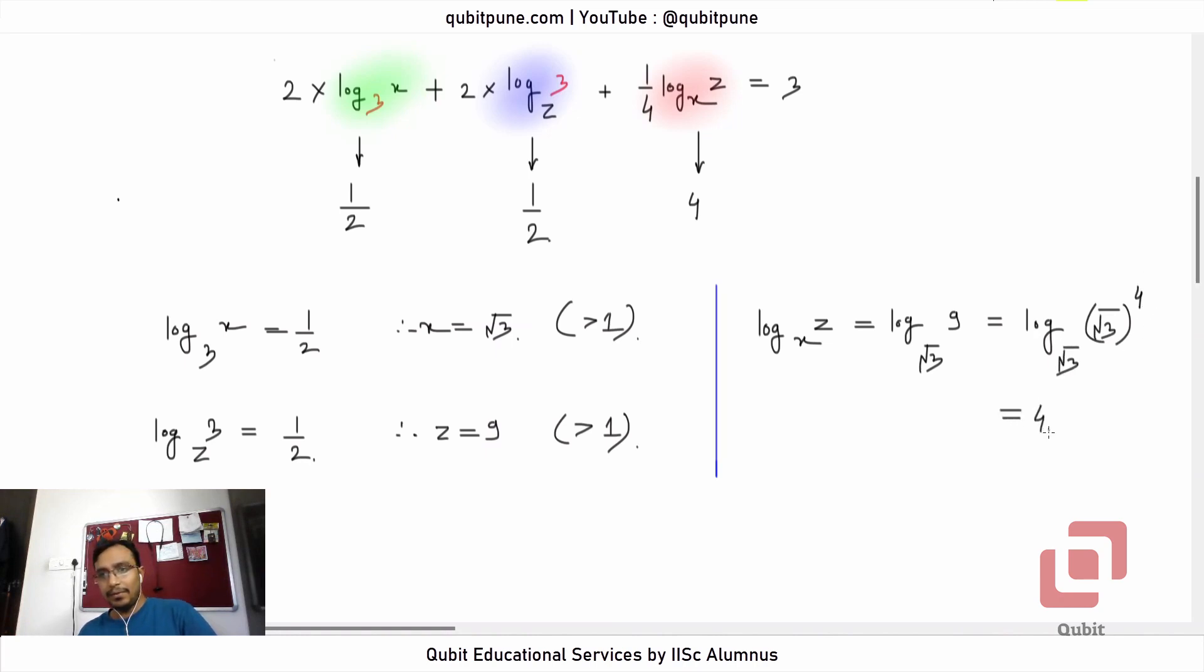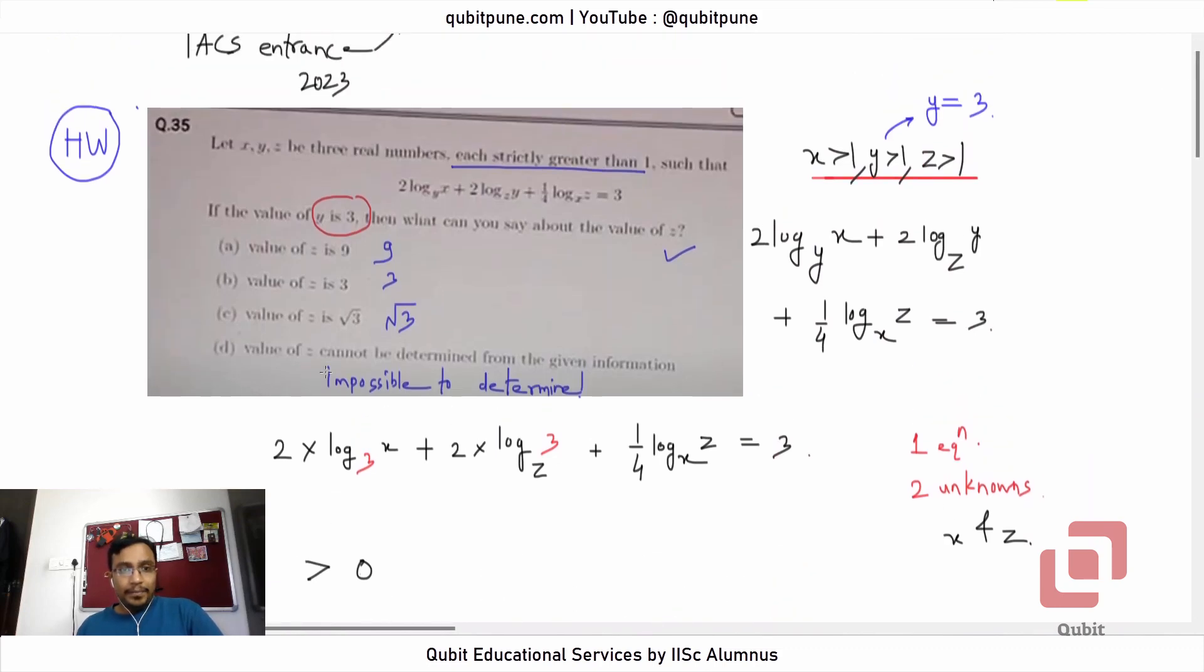And this is 4, so that gives me one pair of x and z: x is root 3 and z is 9. So the correct option is 9.